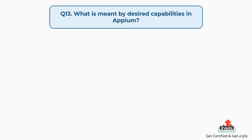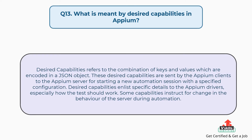Question number 13: What is meant by desired capabilities in Appium? Desired capabilities refers to the combination of keys and values which are encoded in a JSON object. These desired capabilities are sent by the Appium clients to the Appium server for starting a new automation session with a specified configuration. Desired capabilities enlist specific details to the Appium drivers, especially how the test should work. Some capabilities instruct for a change in the behavior of the server during automation.